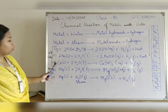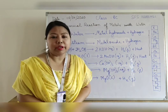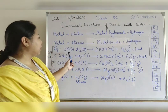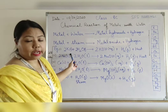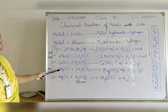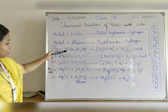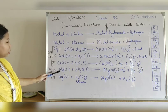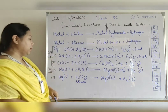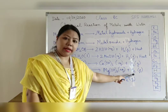Calcium also reacts with cold water to produce calcium hydroxide, hydrogen and a little bit of heat - not as much heat as is produced by the reaction of potassium and sodium with water. Since magnesium is less reactive than potassium, sodium and calcium, magnesium does not react with cold water. It will react with hot water to produce magnesium hydroxide and hydrogen.